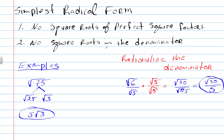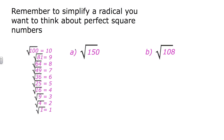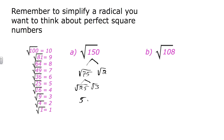To summarize: to simplify a radical, think about the perfect square numbers. Here are a couple more examples illustrating the first rule — no perfect square factors under the square root. For the square root of 150, you can break it down to square root of 75 times square root of 2. Breaking 75 down gives square root of 25 times square root of 3. So we have three factors: square root of 25 is 5, times square root of 3 times square root of 2. Multiplying square root of 3 and square root of 2 gives square root of 6. So square root of 150 in simplest radical form is 5 square roots of 6.